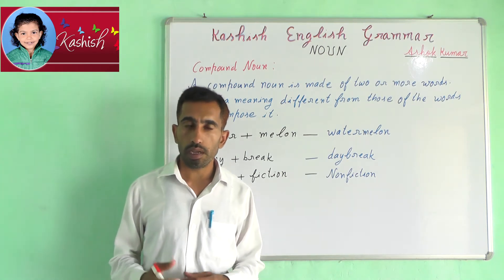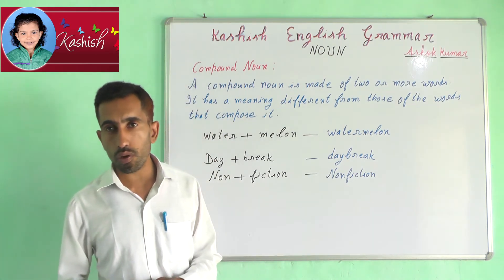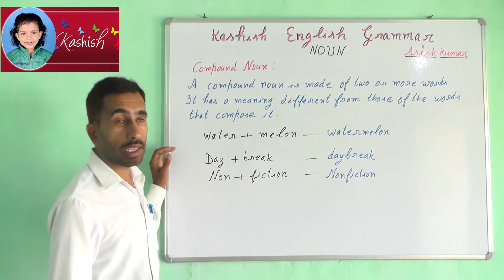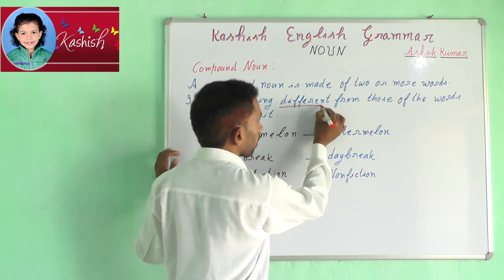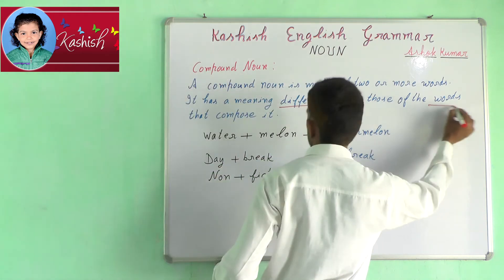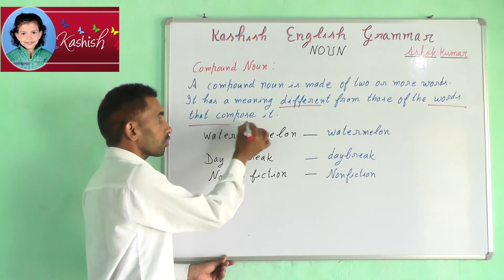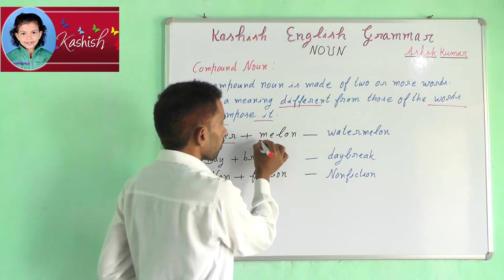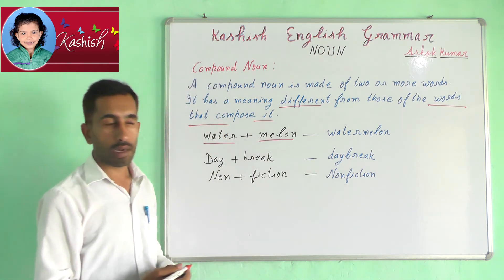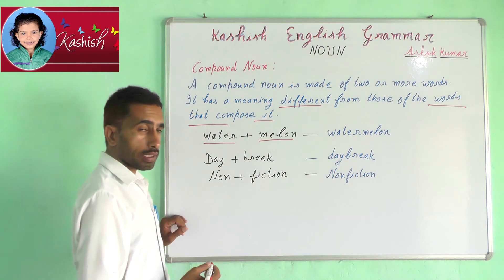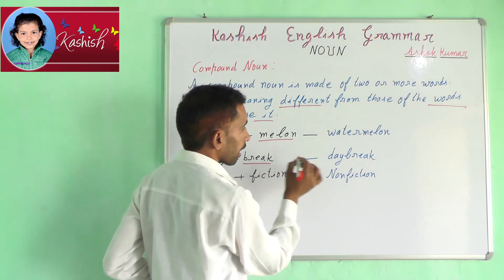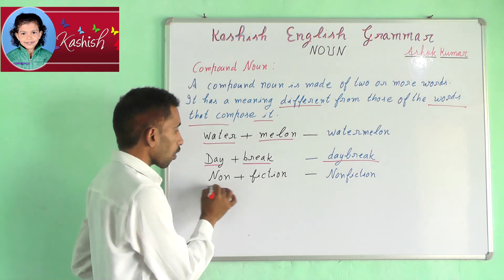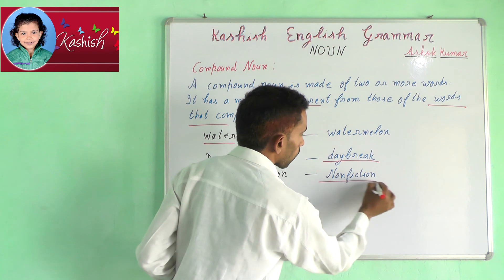Compound Noun: a compound noun is made of two or more words. It has a meaning different from those of the words that compose it. For example, water plus melon equals watermelon. Day plus break equals daybreak. Non plus fiction equals non-fiction.